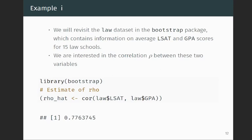That was a toy example comparing jackknife and Bootstrap. Now let's revisit the law dataset from the jackknife lecture, which contains average LSAT and GPA scores for 15 law schools. We're interested in the correlation between these two variables. We load the package Bootstrap and compute the estimate of rho using the sample correlation, getting 0.78.